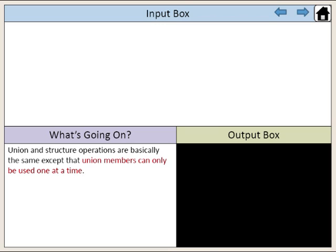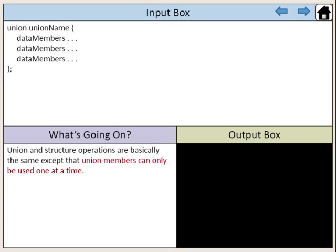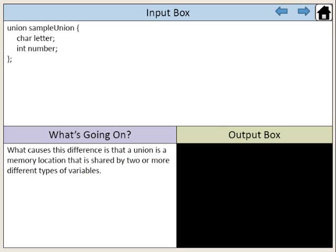Union and structure operations are basically the same except that union members can only be used one at a time. A union follows the same general syntax as a structure. What causes this difference is that a union is a memory location that is shared by two or more different types of variables.